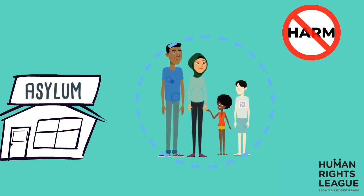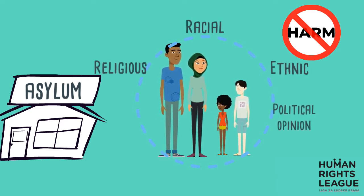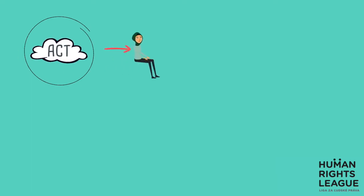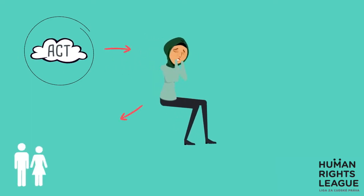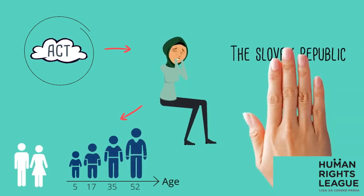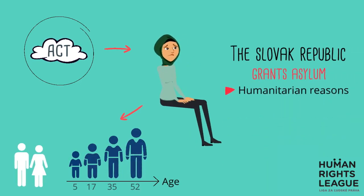These despicable reasons may include racial, ethnic, religious, or political opinion grounds, or for being a member of a particular social group. It may also be an act specifically targeting vulnerable persons of a certain gender or age group. The Slovak Republic also grants asylum for humanitarian reasons.